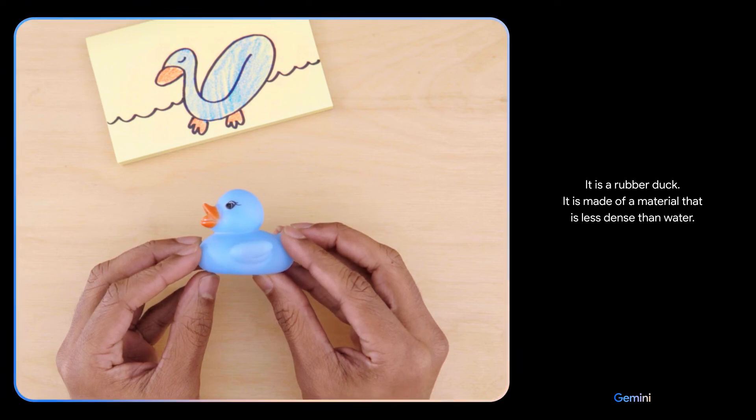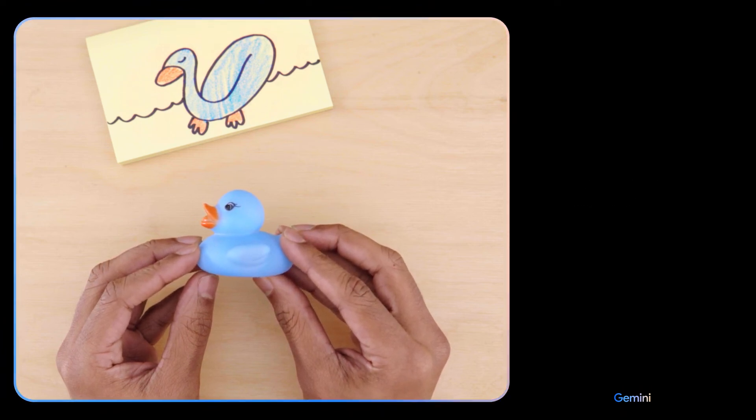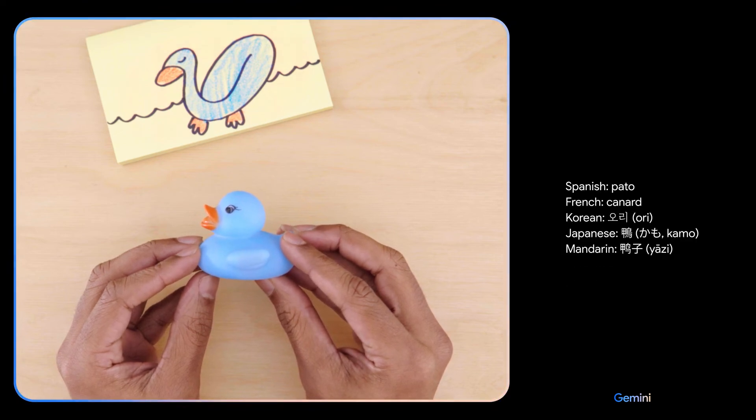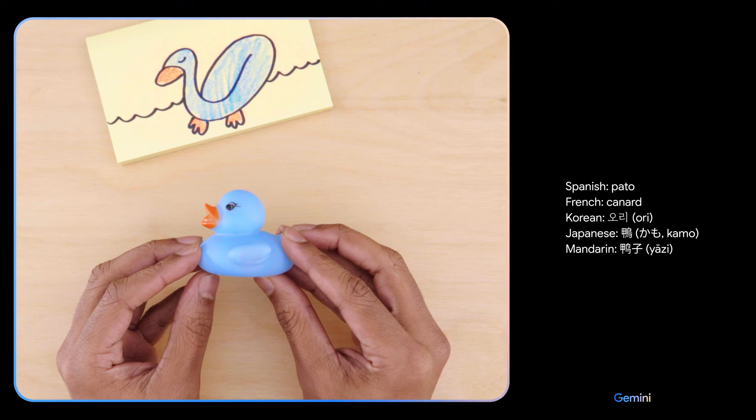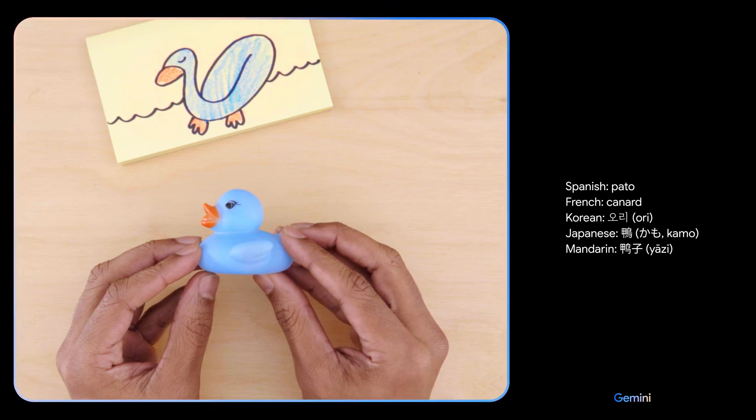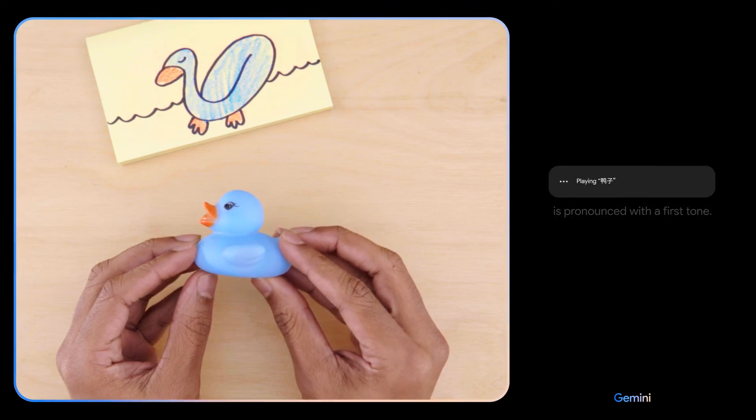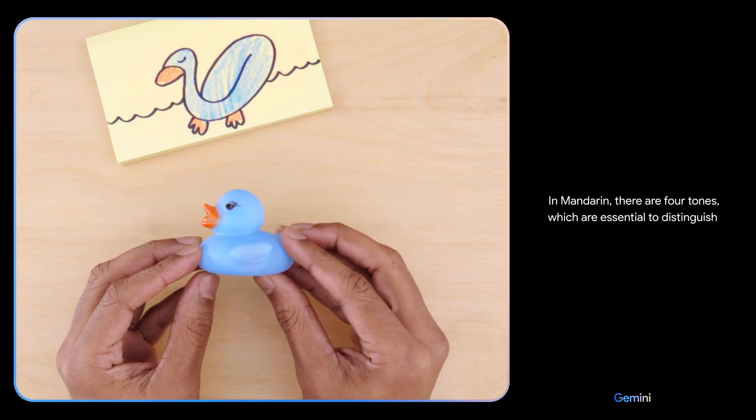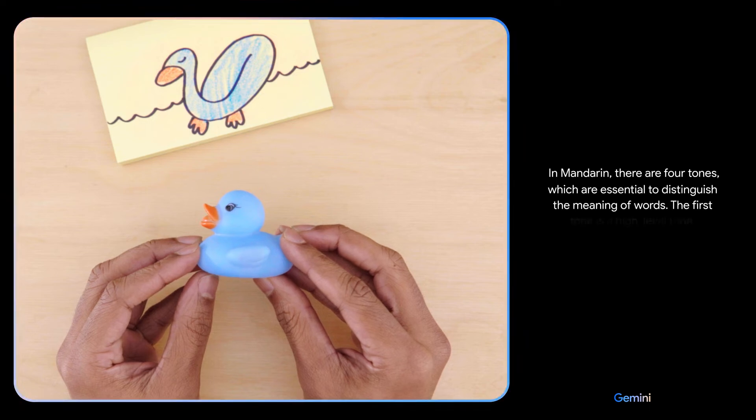Can you teach me how to say this in a different language and give me a few options? Can you explain how to pronounce the Mandarin one? It's pronounced with a first tone. In Mandarin, there are four tones which are essential to distinguish the meaning of words. The first tone is a high level tone.